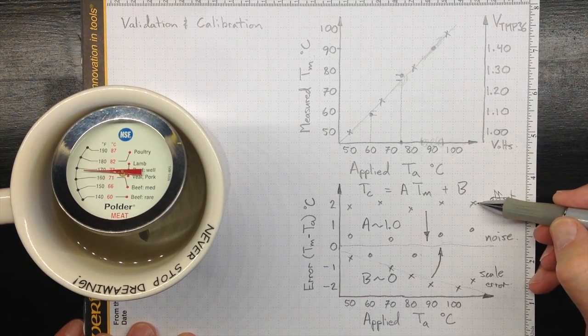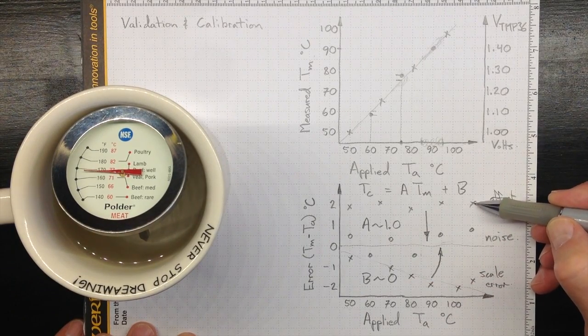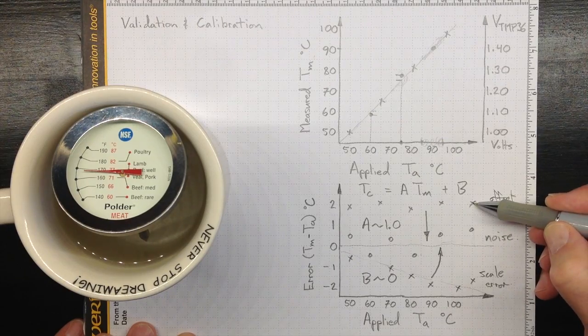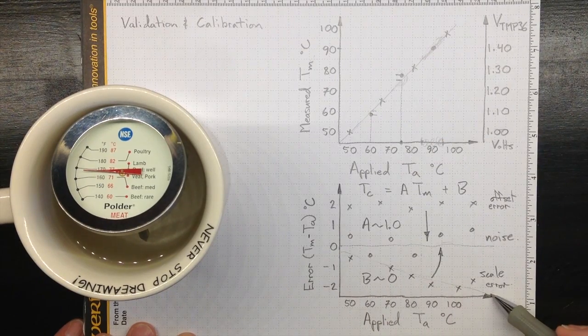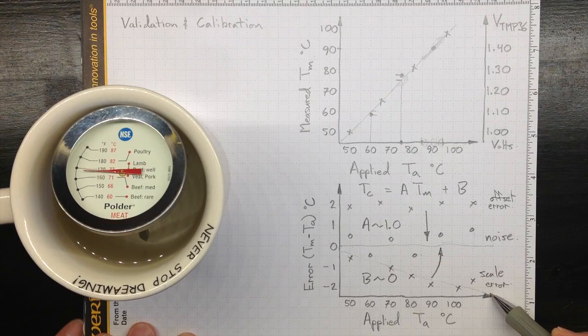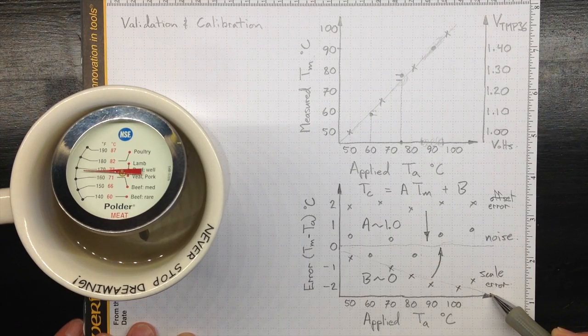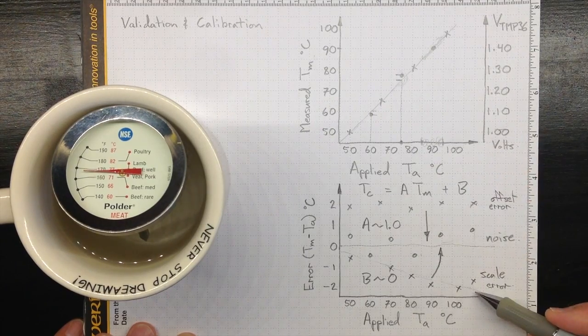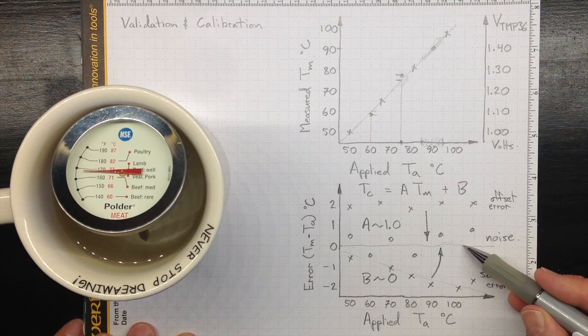In this case, B is going to be negative two. We're going to pull it down here with a negative two. Here, in this case, A might be 1.02 to swing the 100 degree reading up by about two degrees.